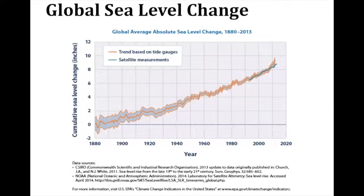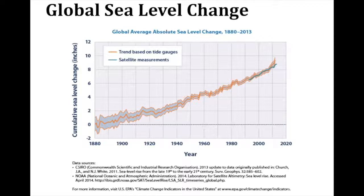To introduce the topic: sea level has been rising globally at least since the late 19th century. Here we have a plot of the global sea level change covering the end of the 19th through the early 21st century. The total sea level rise over this period is about nine inches, which translates into approximately 1.7 millimeters a year. More recently, sea level has been increasing even more so.